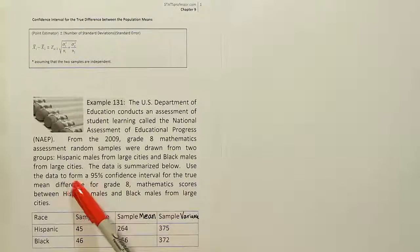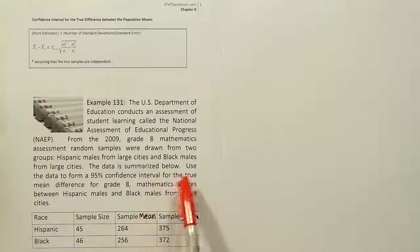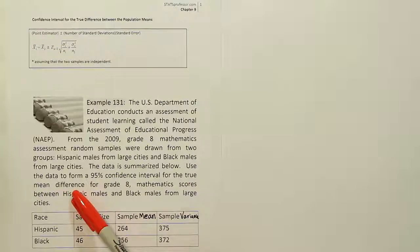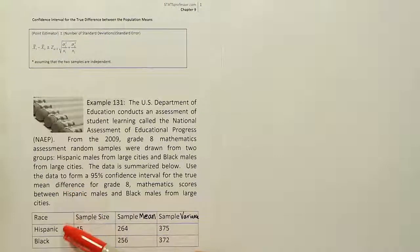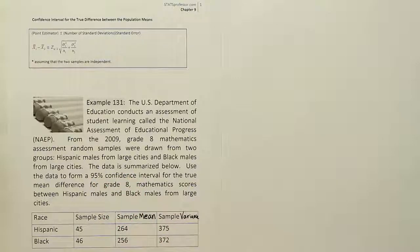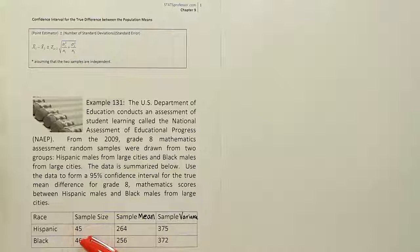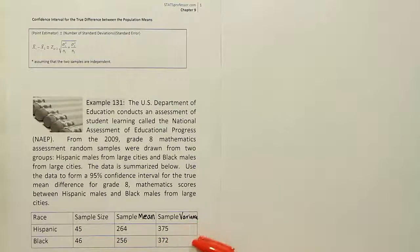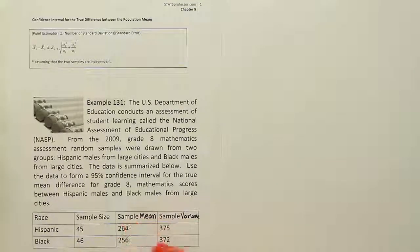So the problem here says to form a 95% confidence interval for the true mean difference. We're comparing two groups and their means using a confidence interval with 95% confidence to do that. Normally our first step is to copy down all of our data, but it's already listed here for us nice and neatly.